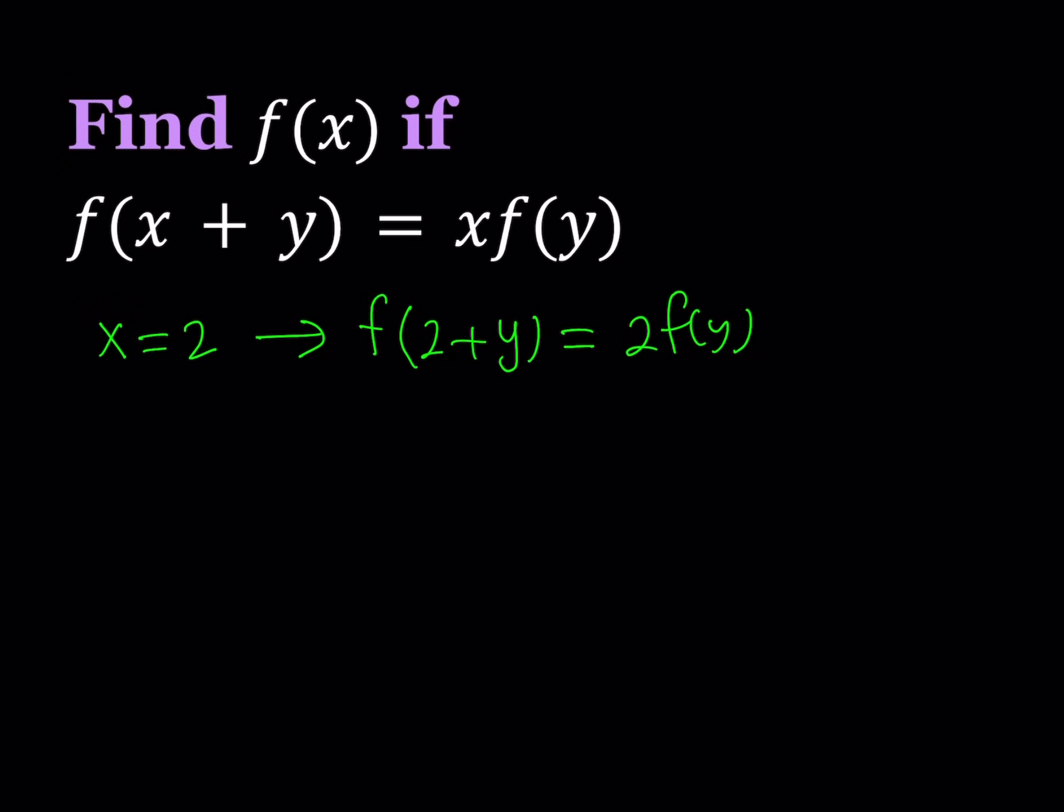Now my goal is to get f of 2 plus y from the given equation in a different way. How can I do that? Well, since we have a lot of freedom here in terms of x and y, we can just replace x with 1 and y with 1 plus y. I'm not writing the equal sign because y does not equal 1 plus y. Maybe I should just use an arrow.